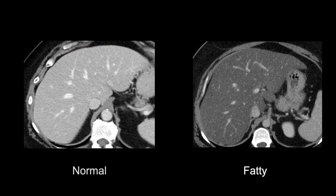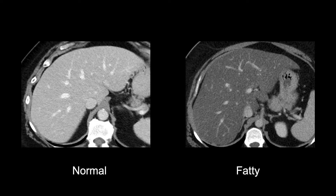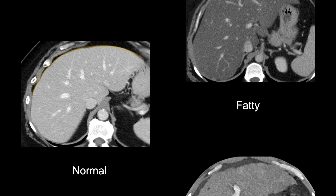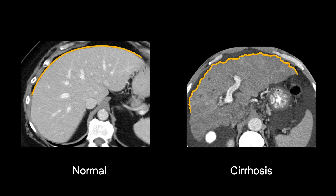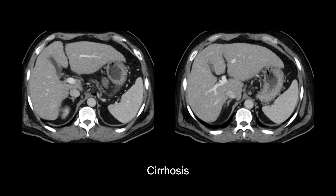Fatty liver, or steatosis, will appear less bright than normal liver tissue due to fat infiltration throughout the organ. Cirrhotic livers often have a nodular, bumpy surface. Cirrhosis can also present with more subtle nodularity of the liver surface, but will often give other hints of the diagnosis, including widening of the fissure and enlargement of the left and quadrate lobes.